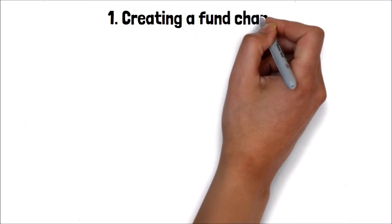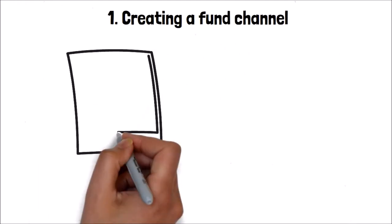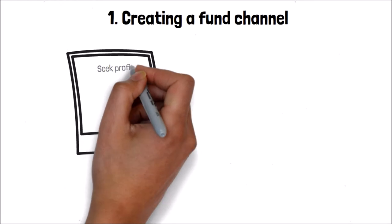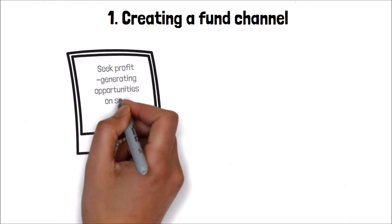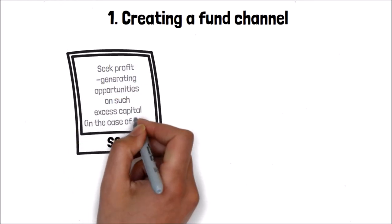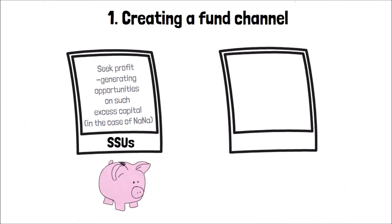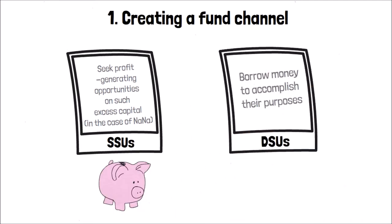Role 1: Creating a fund channel. Through financial systems, SSU can seek profit-generating opportunities on their excess capital — as in the case of Nana. And DSU can also borrow to complete their purposes.